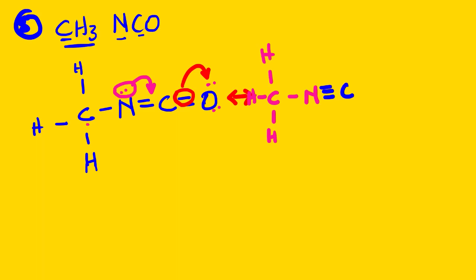We have carbon single-bonded with oxygen, and then oxygen will have six lone pairs. Carbon is still bonded four times, so there's no charge on carbon. Now we look at nitrogen — remember that nitrogen, if it bonds four times, yields a positive charge. So in this case we have positive one on nitrogen and negative one on oxygen, which still gives you zero overall.